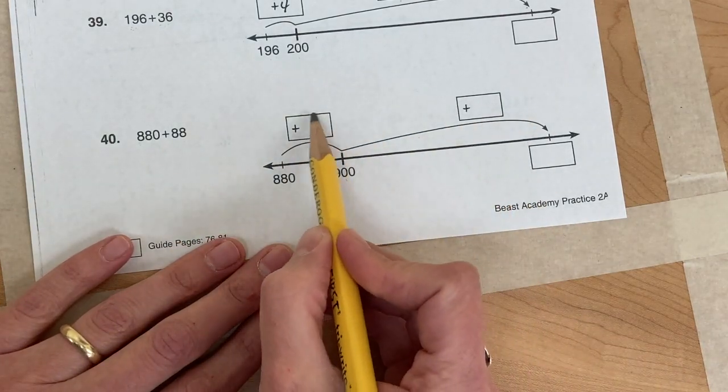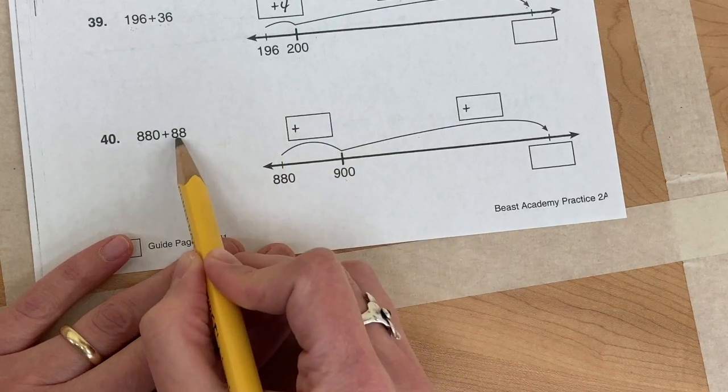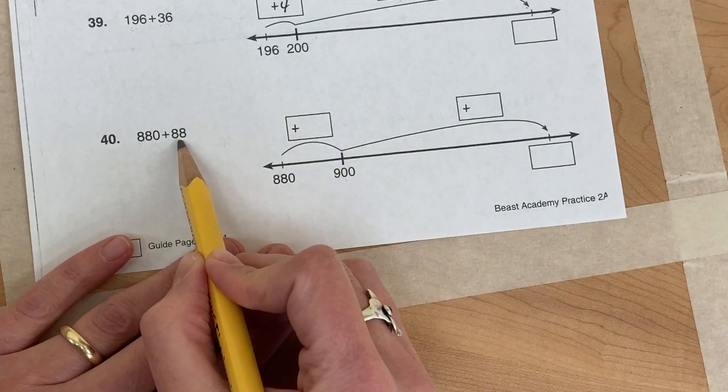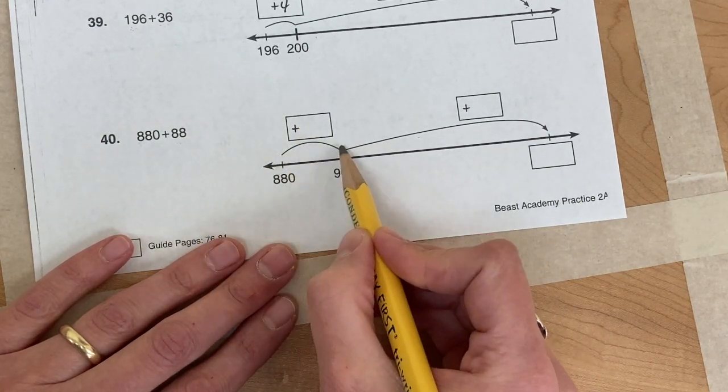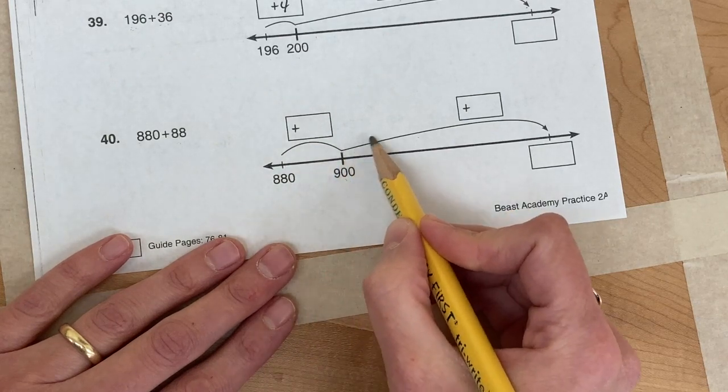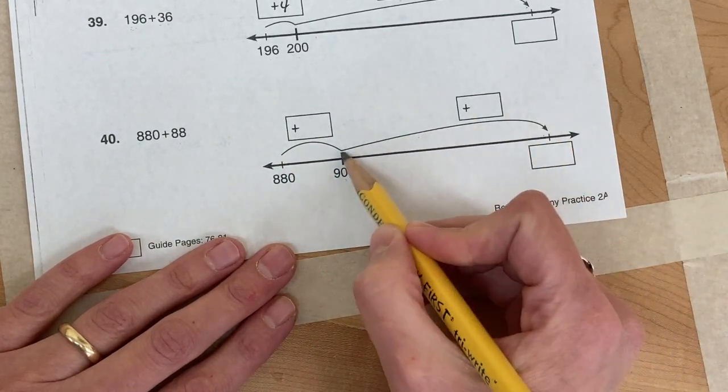Once you've figured out that, then this number here needs to be taken away from that 88. Because now you've used up some of it, and now you have some left to add.